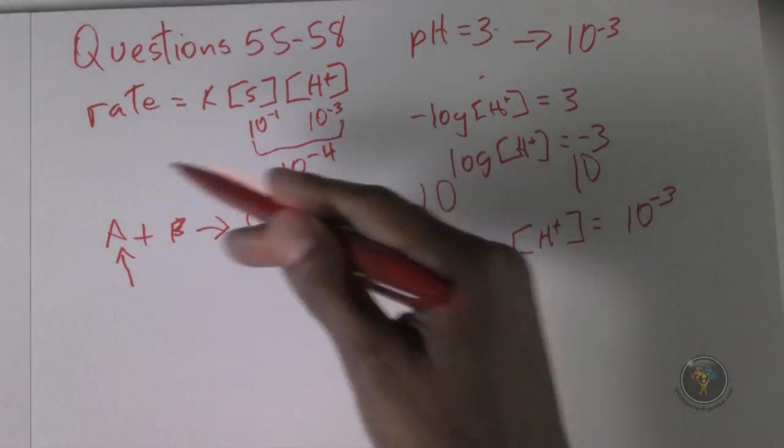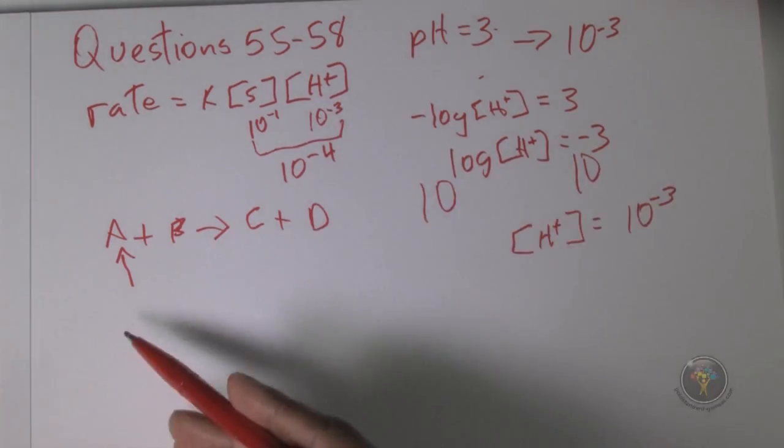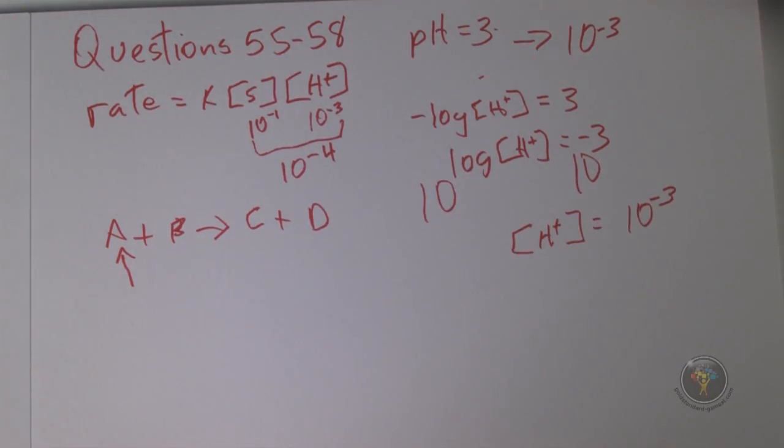Nothing is being created or destroyed, it's going from one form to another form. So the answer would be B, which is the rate of change of the sucrose concentration, but it would have the opposite sign because they're going in two different directions - one's reacting and one is being produced.